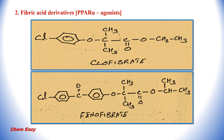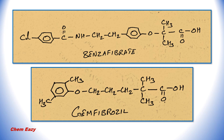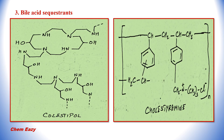The second category is fibric acid derivatives. This one is the structure of clofibrate and this is fenofibrate. This is the structure of bezafibrate and gemfibrozil. Under bile acid sequestrants, this is the structure of colestipol and this one is cholestyramine.